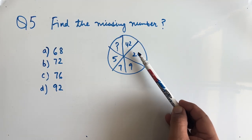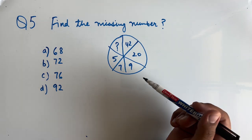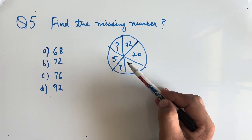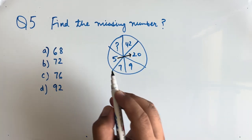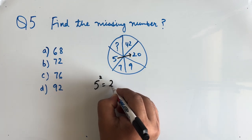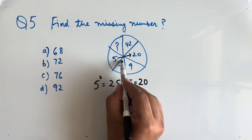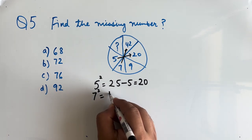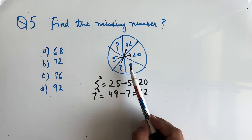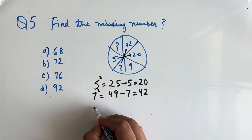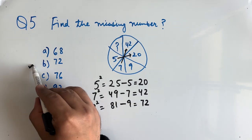Now question number 5: find the missing number — 42, 29, 7, 5, and we have to find this missing number. In these types of questions we have to find the relation clockwise, anticlockwise, or diagonal wise. Opposite to 5 is 20. Now 5 squared is 25; if we subtract 5 we get 20. Similarly, opposite to 7 is 42; 7 squared is 49, and if we subtract 7 from it we get 42. So applying the same logic on 9: 9 squared is 81, and if we subtract 9 we get 72. So 72 is the correct answer.